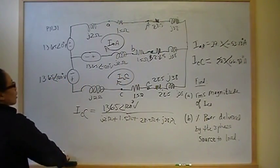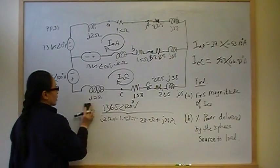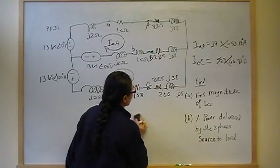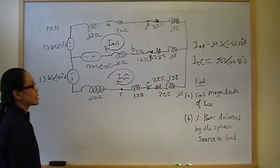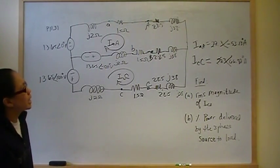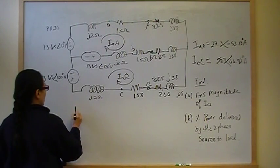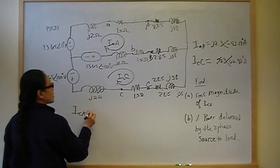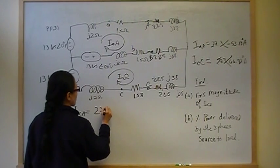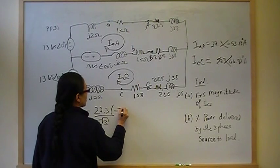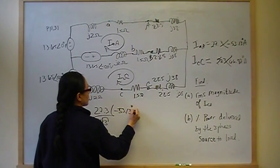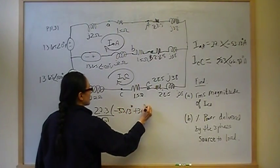Okay, so now that we know the line current, the phase current is just the line current divided by root 3, and it leads the line current by 30 degrees. So ICA is going to be 27.3 over root 3, negative 53.13 plus 30 degrees amps.